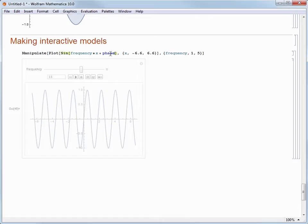First, the symbol phase is colored in dark blue and not the same teal color as the other symbols like frequency. This is because right now, phase is undefined. So Mathematica doesn't know what it is. And it's colored differently than frequency, which is defined as having a value from 1 to 5.